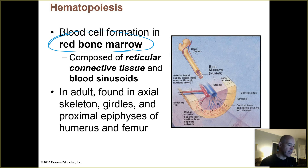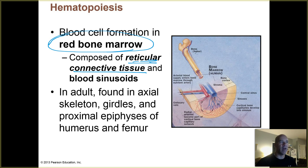The red bone marrow consists of reticular connective tissue — you might have some recollection of hearing that back in Biology 201. That's a type of connective tissue that contains a lot of reticular fibers, which are kind of like thinner collagen fibers. They're arranged more or less in a network or a mesh, which helps hold those tissues together.